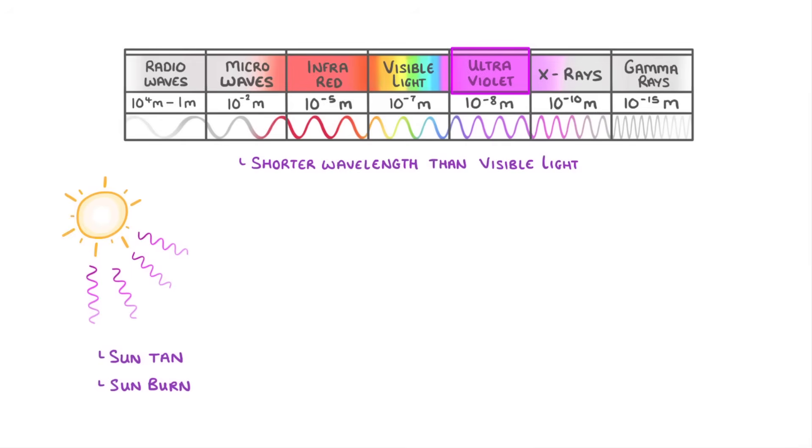We can also generate ultraviolet radiation ourselves for using things like sunbeds, which we use to get an artificial tan.